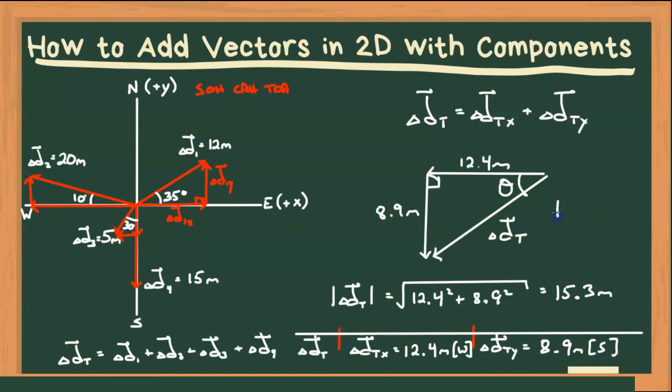Now we're also going to need that direction. So since we know opposite and adjacent, let's use that tangent. So the tan of theta is going to equal to opposite, so 8.9, divided by adjacent, 12.4. Take the inverse tan of both sides. Make sure your calculator is on degrees and not radians. And we will get an angle of 36 degrees. Therefore, our displacement, our total displacement, when we add all four of those vectors is 15.3 meters west, 36 degrees south.